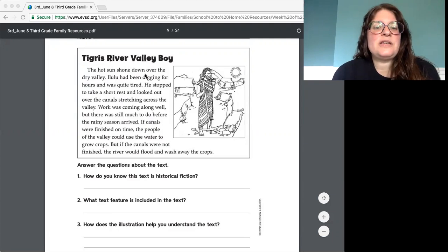The hot sun shone down over the dry valley. Ilulu had been digging for hours and was quite tired. He stopped to take a short rest and looked out over the canals, stretching across the valley. Work was coming along well but there was still so much to do before the rainy season arrived. If canals were finished on time, the people of the valley could use the water to grow crops. But if the canals were not finished, the river would flood and wash away the crops.